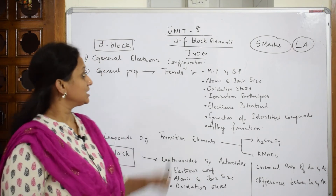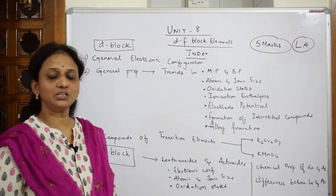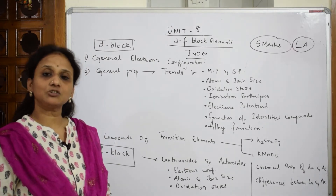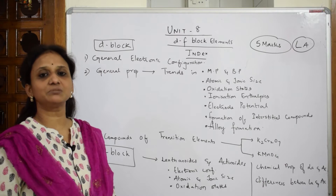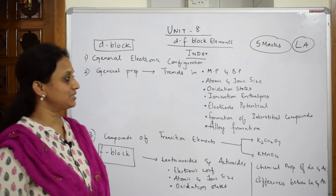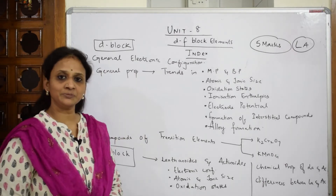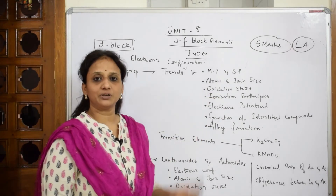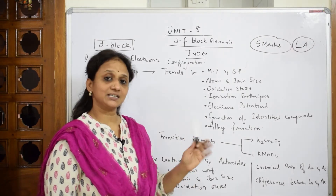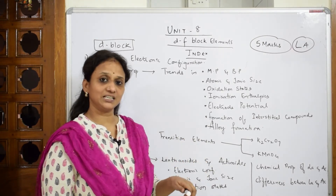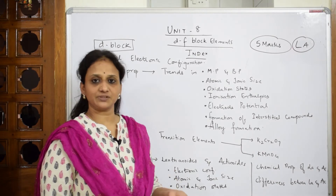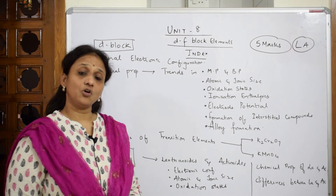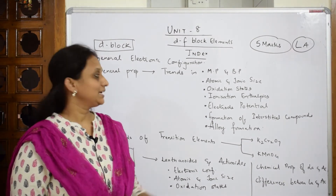In D and F block, as we know, the periodic table is divided into s, p, d, and f blocks. We are going to study the transition metal elements and inner transition metal elements — their general configuration and trends, including melting point, boiling point, atomic size, ionic radii — whether they are decreasing, shown graphically and through questions. Oxidation state is a very important topic with lots of questions based on it.